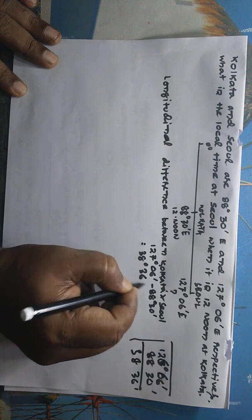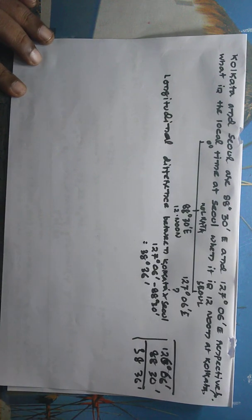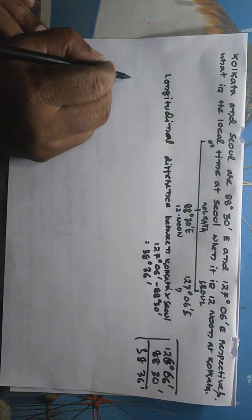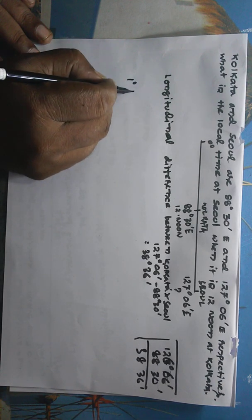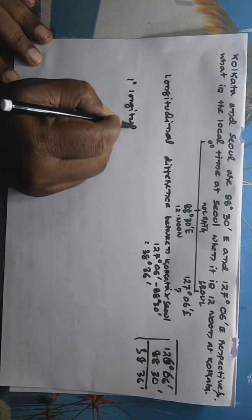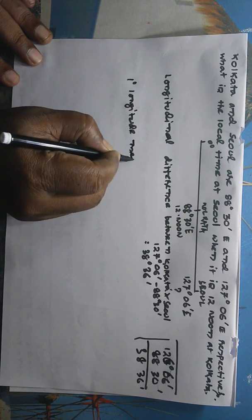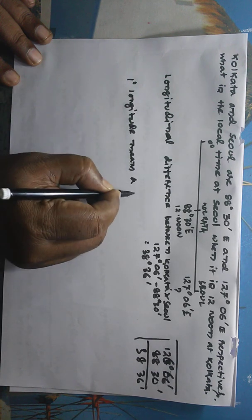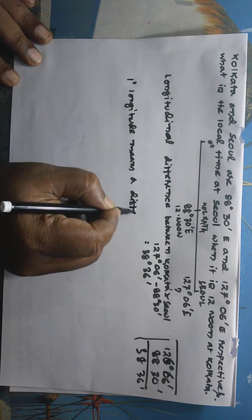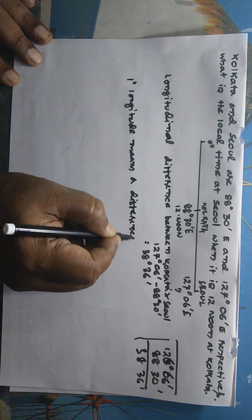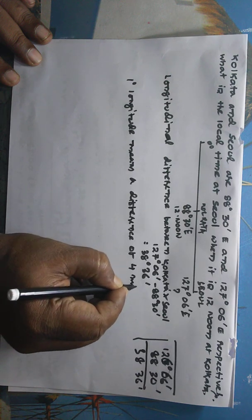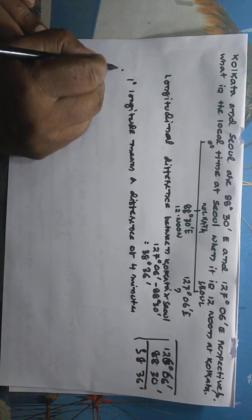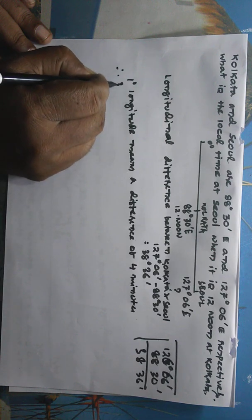Now we have to write: 1 degree longitude means a difference of 4 minutes. Therefore 38 degrees, 38 degree longitude means a difference of 38 into 4 minutes.